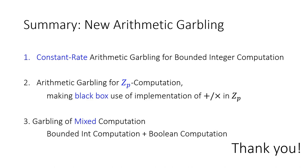Question: Regarding result three, do we still need some kind of arithmetic-to-Boolean conversion, or is it free in your new garbling scheme? Answer: For result three, we think of gates as having two types. Arithmetic gates are handled using our arithmetic gadgets, and Boolean computation gates are already represented in Boolean circuits, so we garble them using Yao. We don't convert arithmetic gates to a specific Boolean implementation. We're using the Boolean thing as a black box.